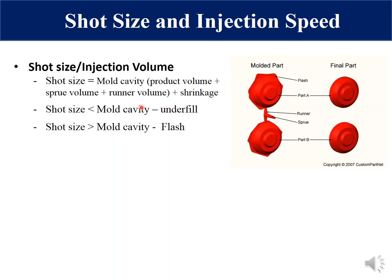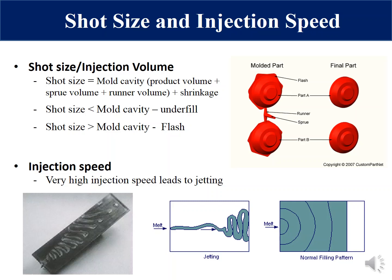When the melt undergoes cooling it also leads to shrinkage, so when calculating shot size we need to account for polymer shrinkage. Two conditions may arise: if the shot size is smaller than the mold cavity, this is called short shot, which leads to underfill. If the shot size is higher than the mold cavity, flash will occur. Therefore, the ideal injection volume equals mold cavity volume plus shrinkage.